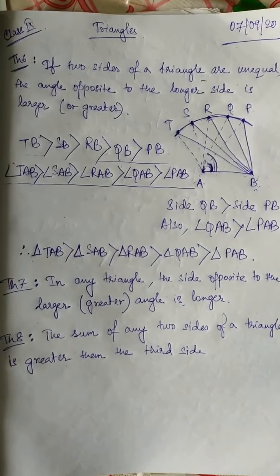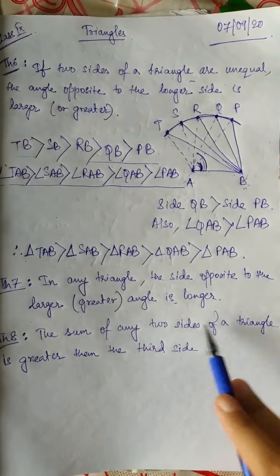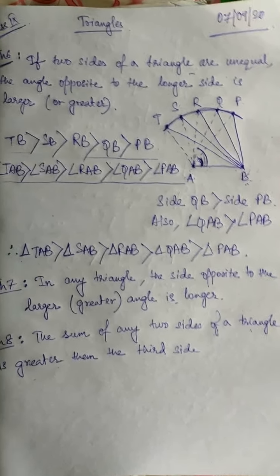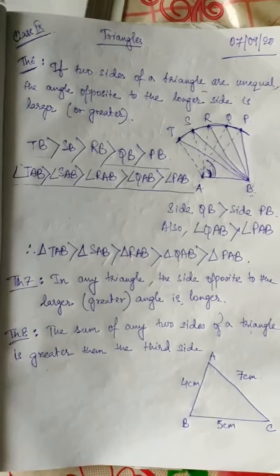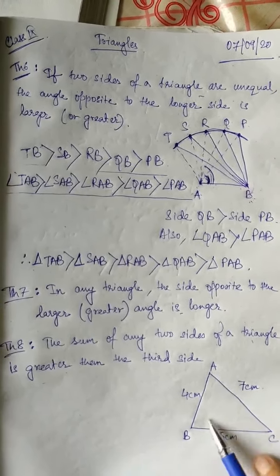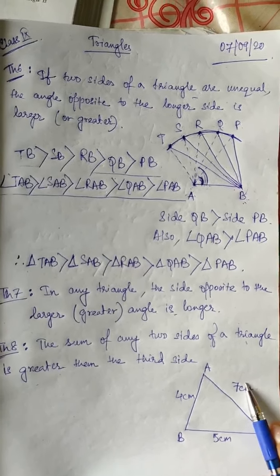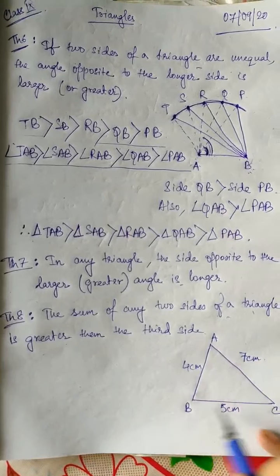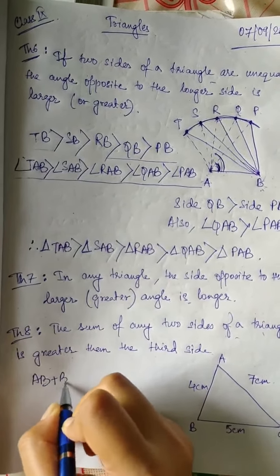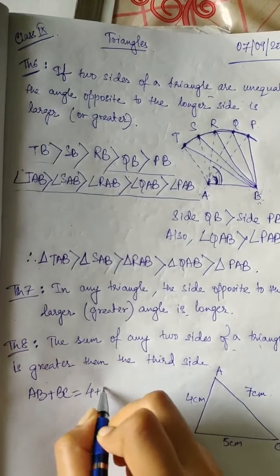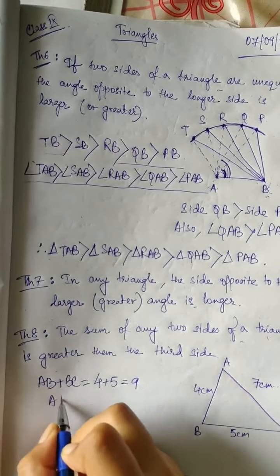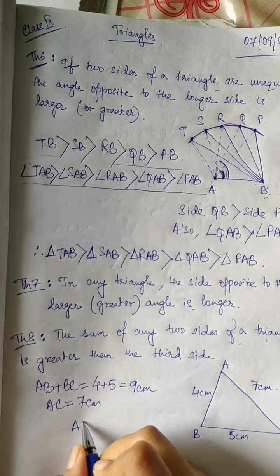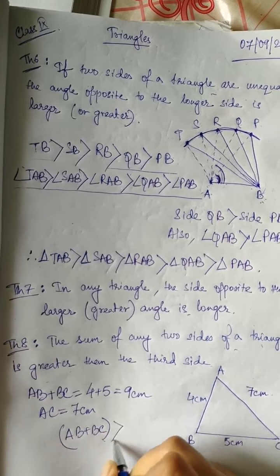Now the last theorem of this chapter is theorem 8. It says that the sum of any two sides of a triangle is greater than the third side. This theorem can be easily proved by drawing any triangle. Here I am drawing triangle ABC with AB = 4 cm, BC = 5 cm, and AC = 7 cm. We have to see which is the greatest side — clearly AC is the greatest side. Now if I add AB and BC, that gives 4 plus 5, which is 9, and AC is 7 cm. So clearly AB plus BC is greater than AC.